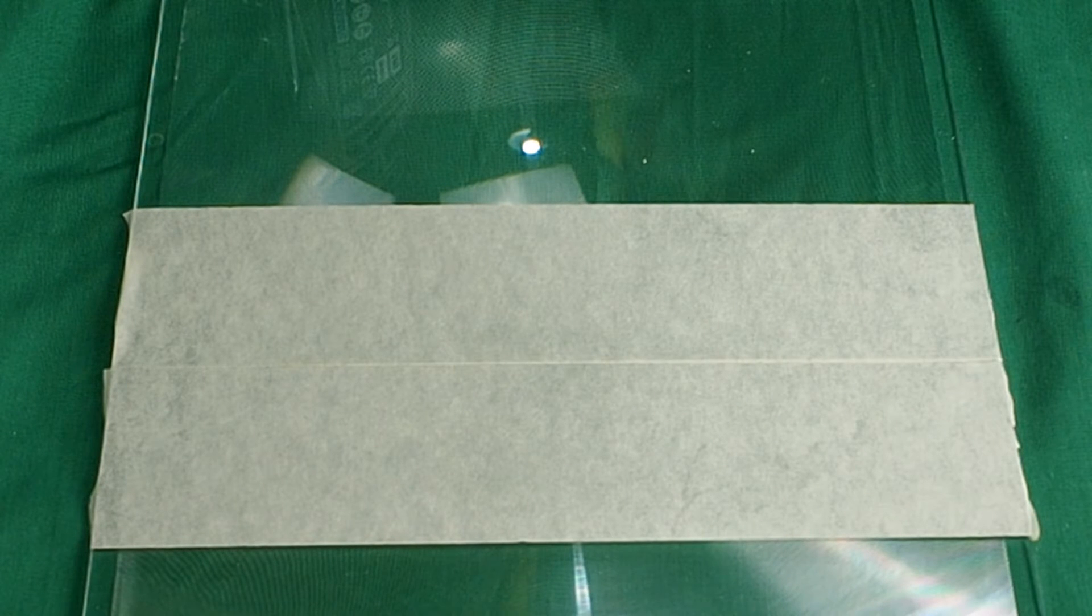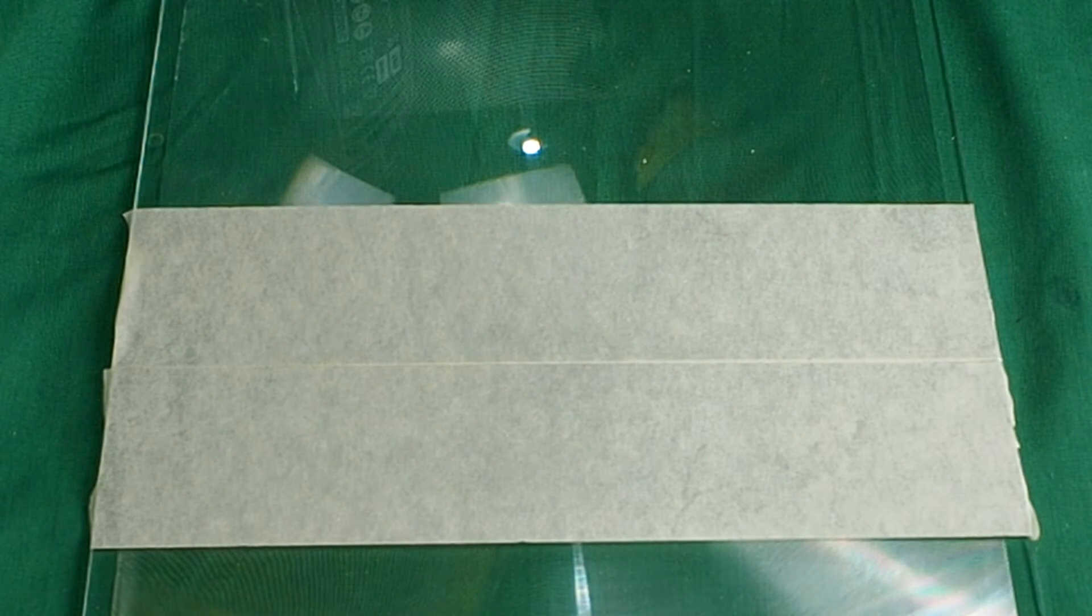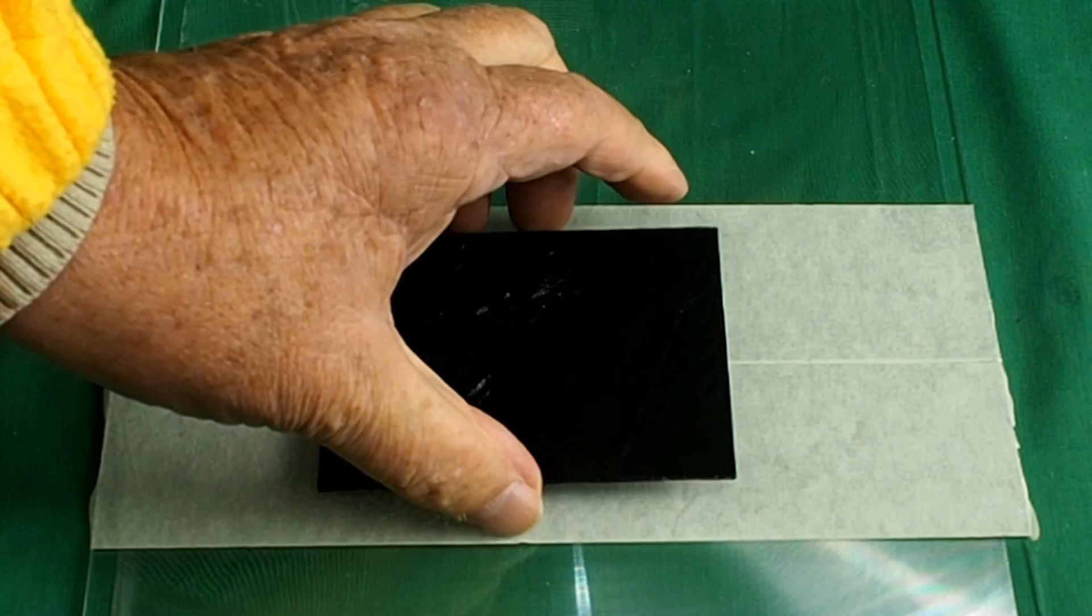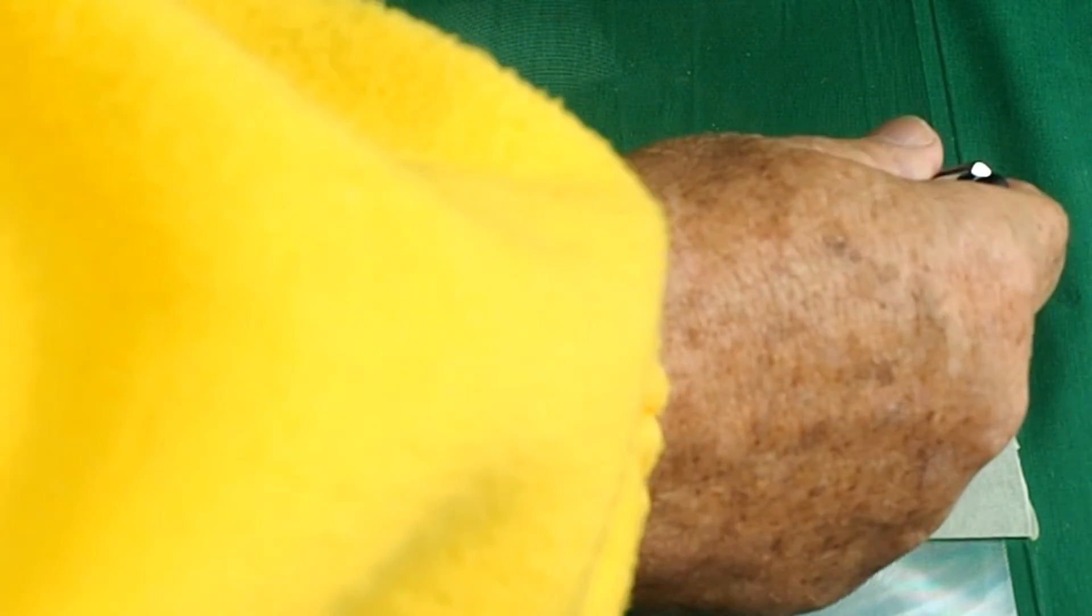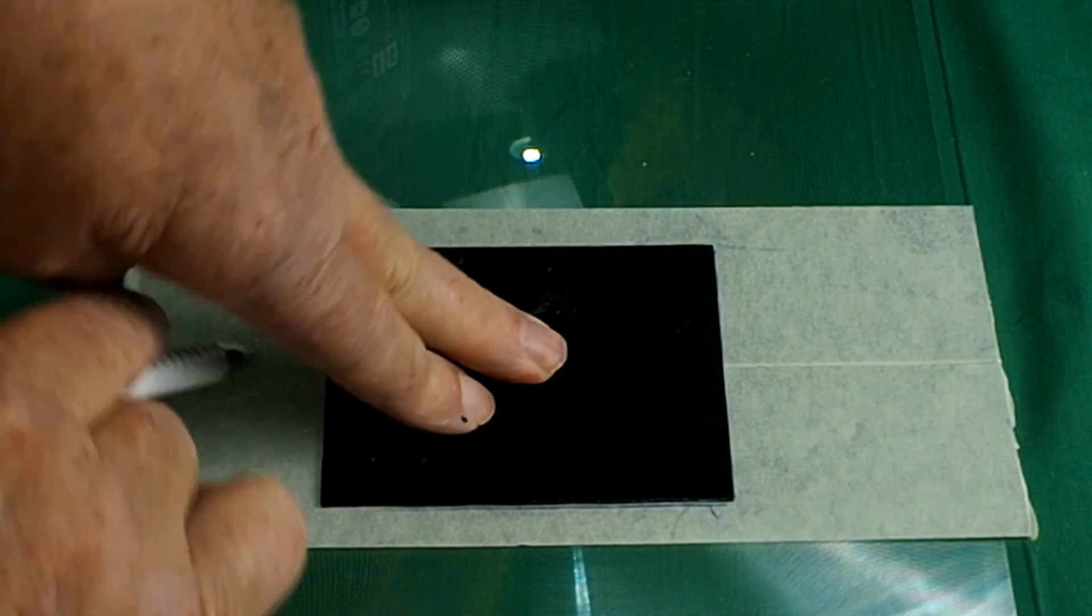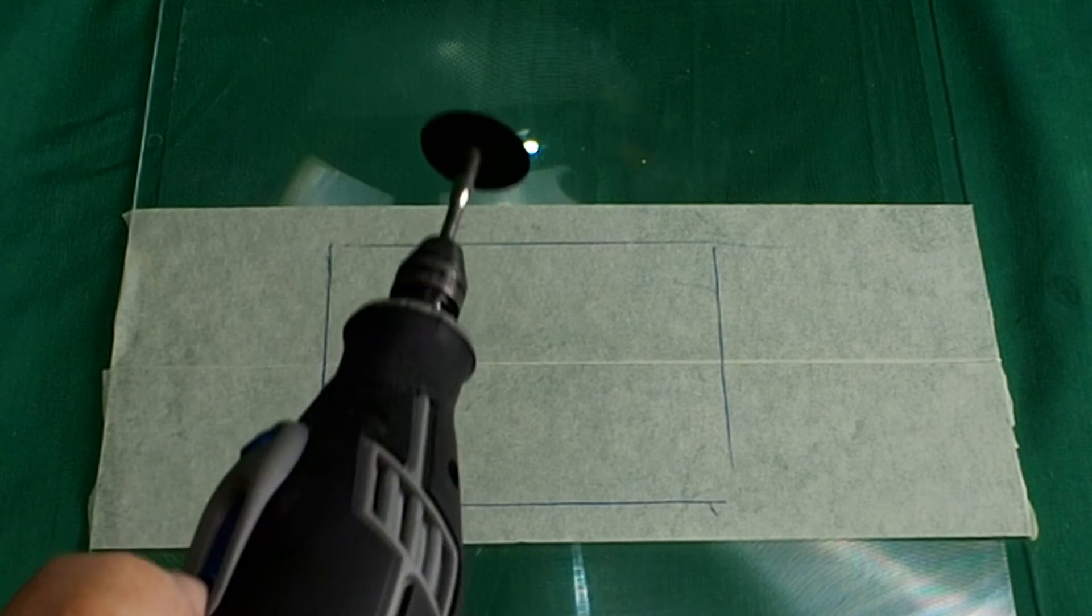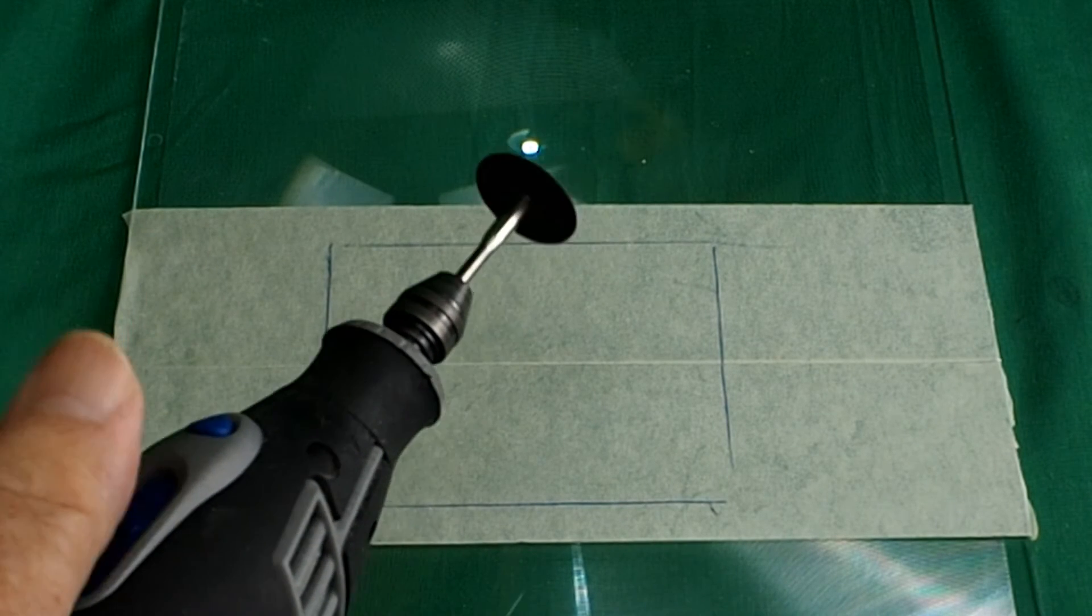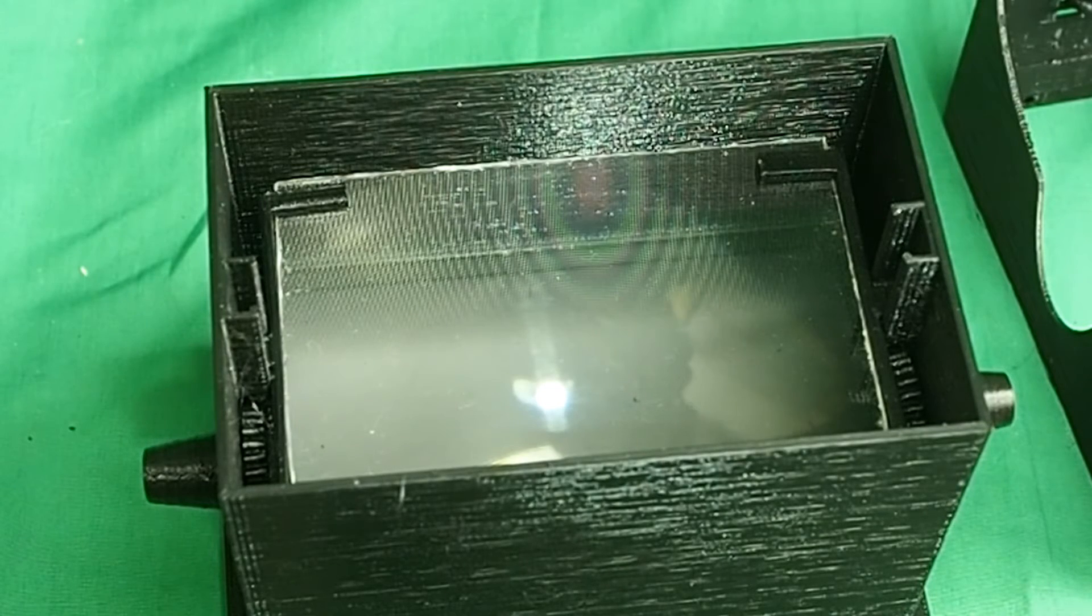When you're cutting the Fresnel, cover it with masking tape first to stop it from being scratched. You can lay your template on the masking tape, draw around it, and then you're ready to Dremel. Now that the lens is in there, the next thing to consider is the eye piece.